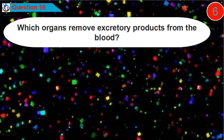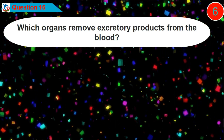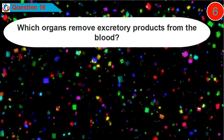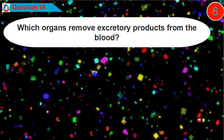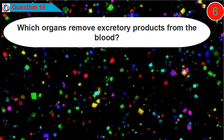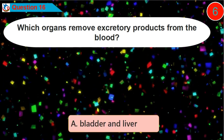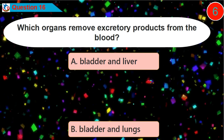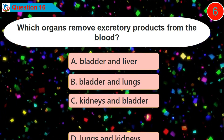Question 16. Which organs remove excretory products from the blood? Is it option A, B, C, or D?